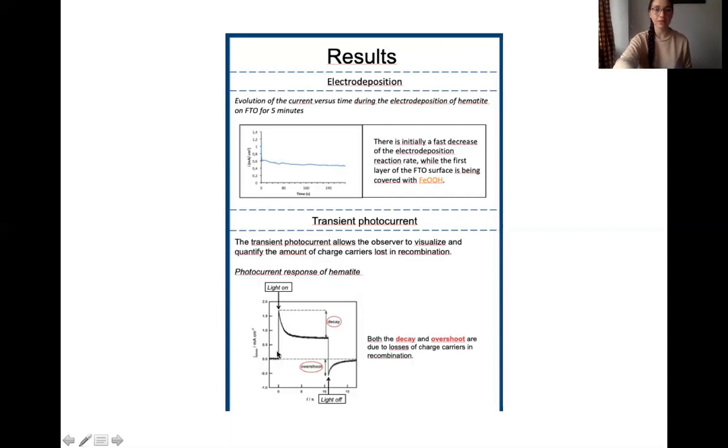You can see when we put our material under illumination when the light turns on, we observe directly a current and then a decay, and here when we turn the light off, an overshoot. Both those decay and overshoot are losses due to the recombination reaction.